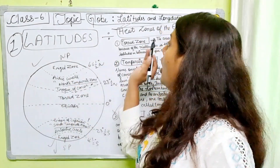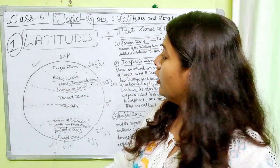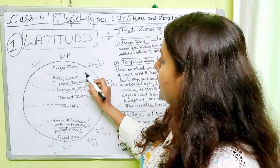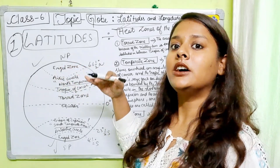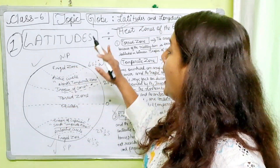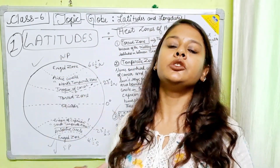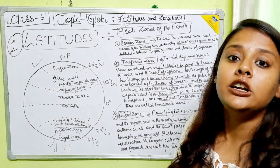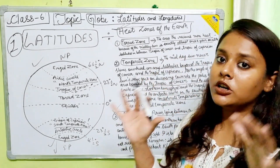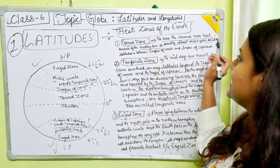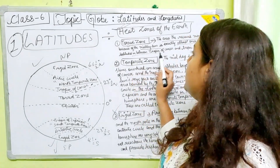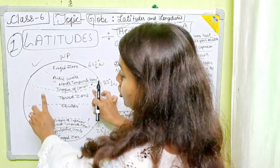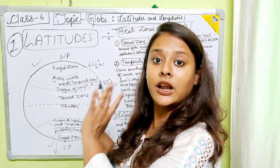There are three types of heat zones present on the Earth. The important latitudes divide the Earth into these zones. The first heat zone is the Torrid Zone — the area that receives maximum heat. The Torrid Zone is the area which receives maximum heat because of the midday sun. All latitudes between the Tropic of Cancer and the Tropic of Capricorn receive the sun at least once a year, making it the hottest zone.